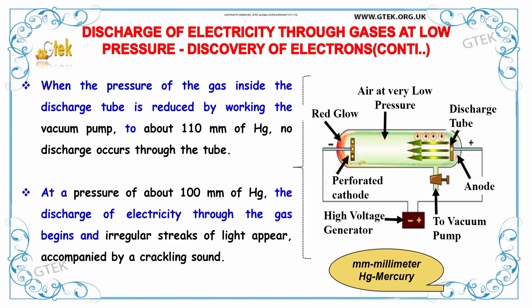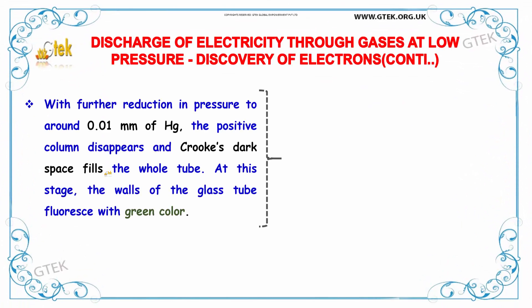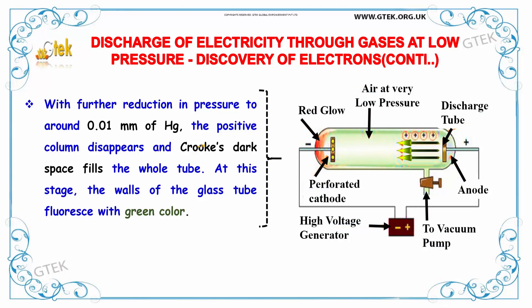there will be no discharge through the tube. At a pressure of about 100 mmHg, the discharge of electricity through the gas begins, and irregular streaks of light appear accompanied by a crackling sound. As the pressure is reduced to the order of 10 mmHg, the irregular streaks broaden into a luminous column extending from the anode almost to the cathode. This column is called a positive column.